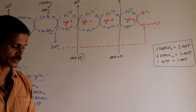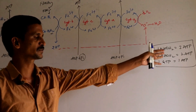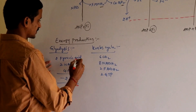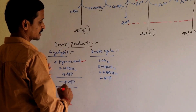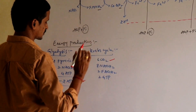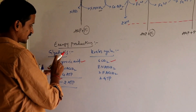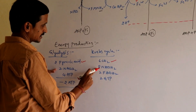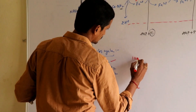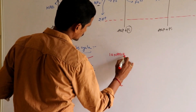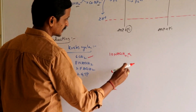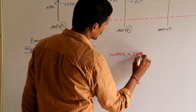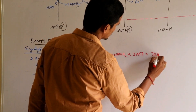Based on the conversions — 1 NADH2 gives 3 ATPs, 1 FADH2 gives 2 ATPs, 1 GTP gives 1 ATP — let us calculate. In glycolysis there are 2 NADH2, and in Krebs cycle there are 8 NADH2, giving a total of 10 NADH2. 10 NADH2 × 3 ATPs = 30 ATPs.